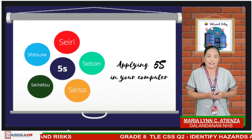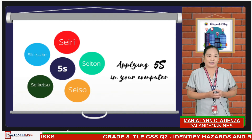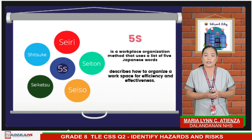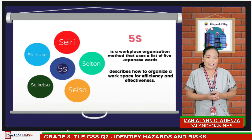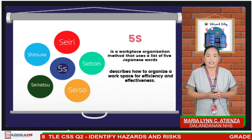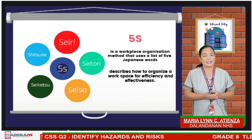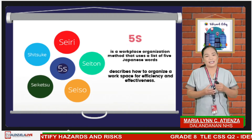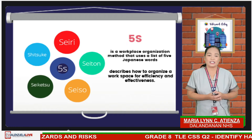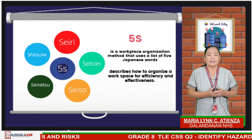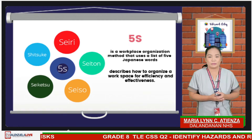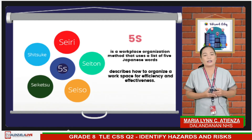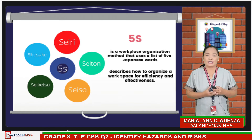There is what we call 5S that we can apply at work. 5S was invented in Japan and stands for five Japanese words starting with the letter S: Seiri, Seiton, Seiso, Seiketsu, and Shitsuke. The 5S process is a structured program to systematically achieve total organization, cleanliness, and standardization in the workplace. A well-organized workplace results in a safer, more efficient, and more productive operation.